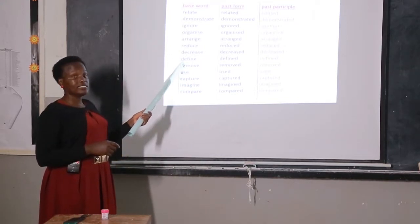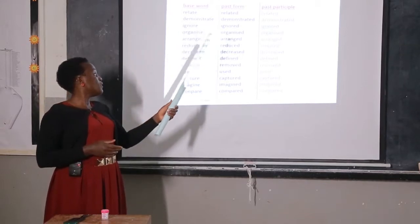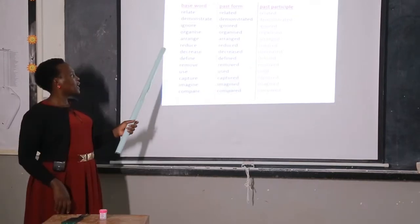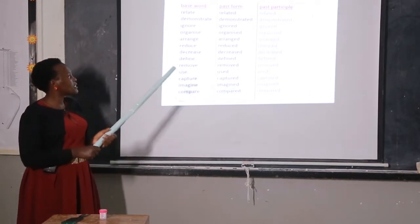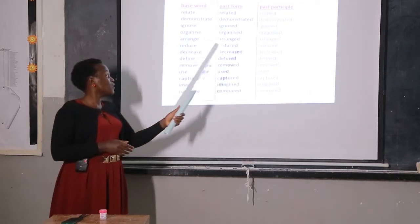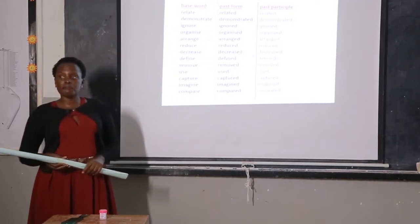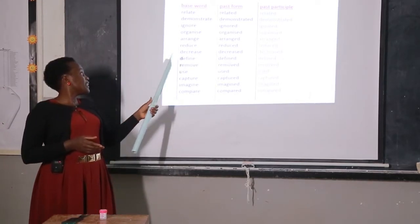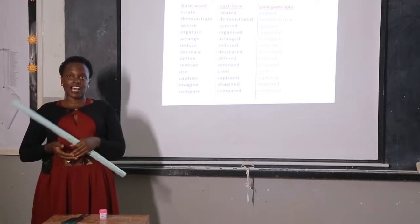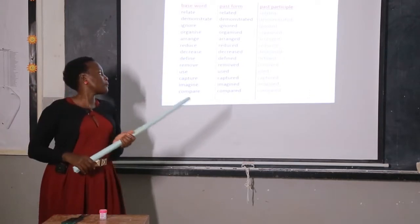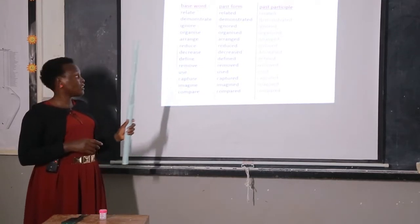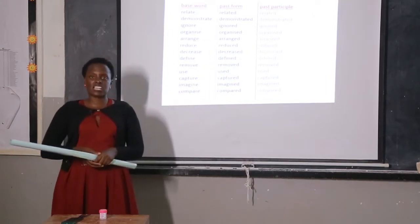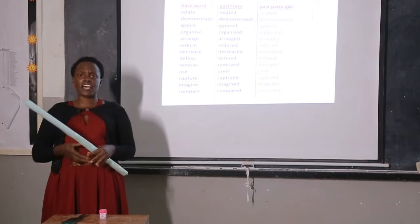We have the word 'define.' In past form: 'defined.' In past participle: 'defined.' Also, 'decrease' in past form is 'decreased,' and in past participle is 'decreased.' For example: Because of the COVID lockdown, the income of many people has decreased as they no longer go to work. We have 'define,' which becomes 'defined.' For example: I don't know how to define transpiration.